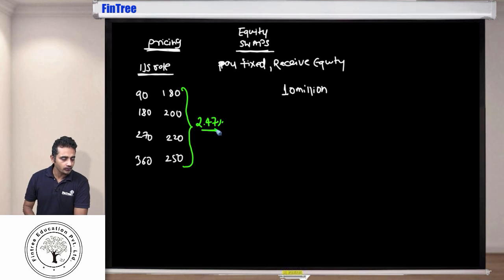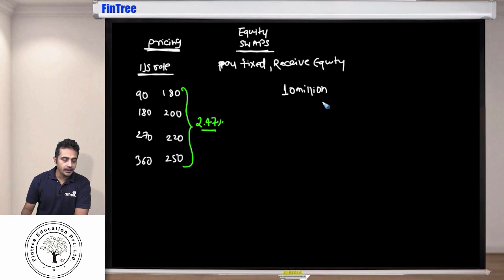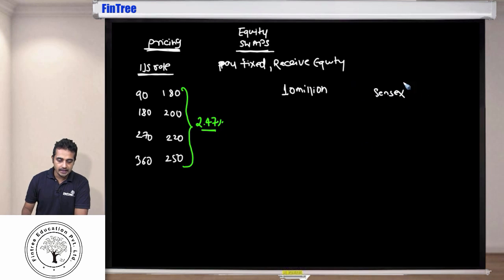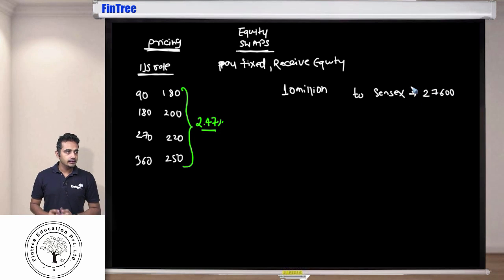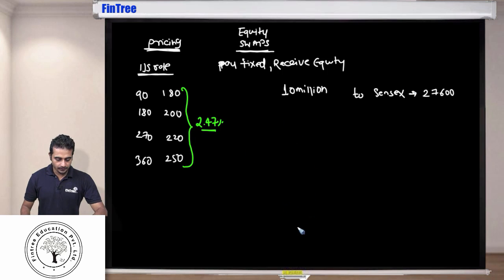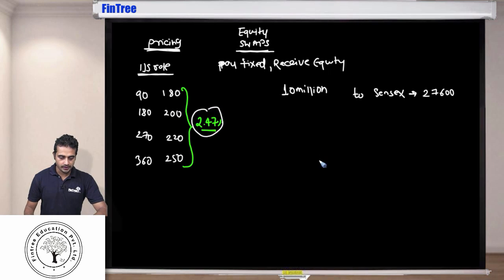The other party will receive equity returns on an index — let's say the Sensex, which is a broad market equity index in India. At time zero, the level of Sensex is 27,600. That is the current level. So the price of the swap is 2.47% — that answers the first question.